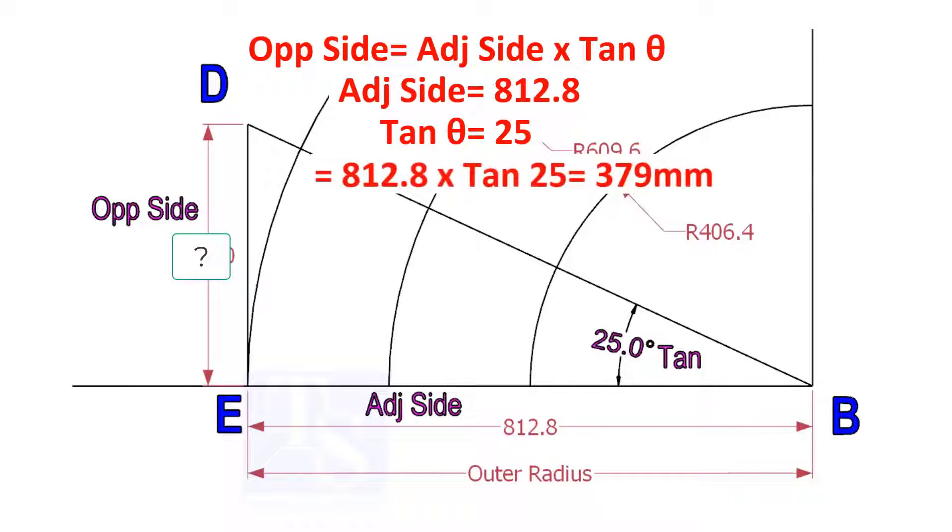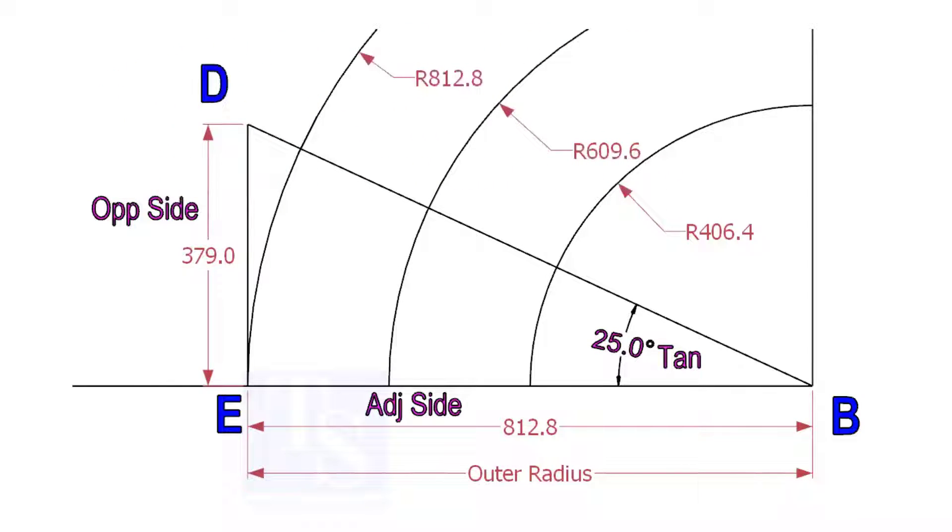812.8 into tan 25 equals 379 millimeters. Draw the line ED vertically and the slant line DB. I hope now you will be able to draw a line in any degree.